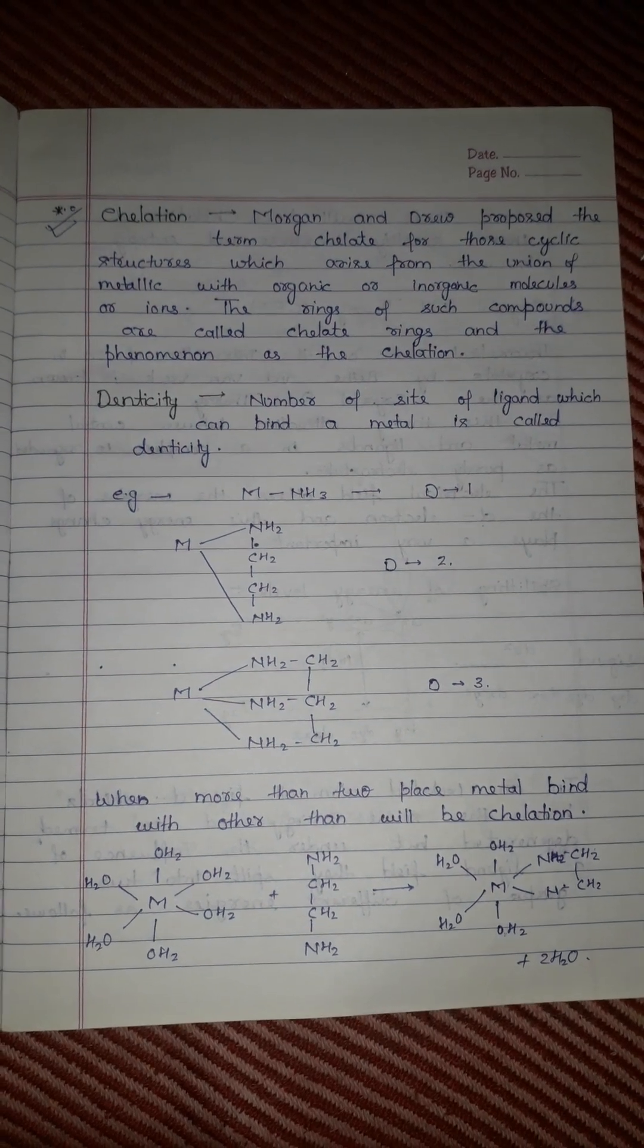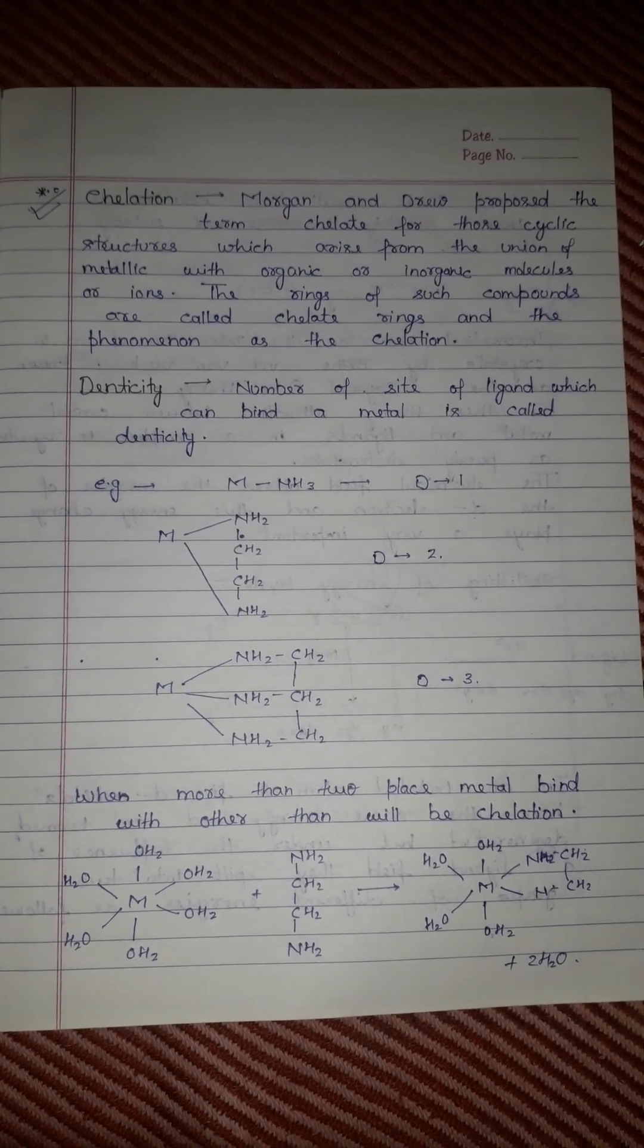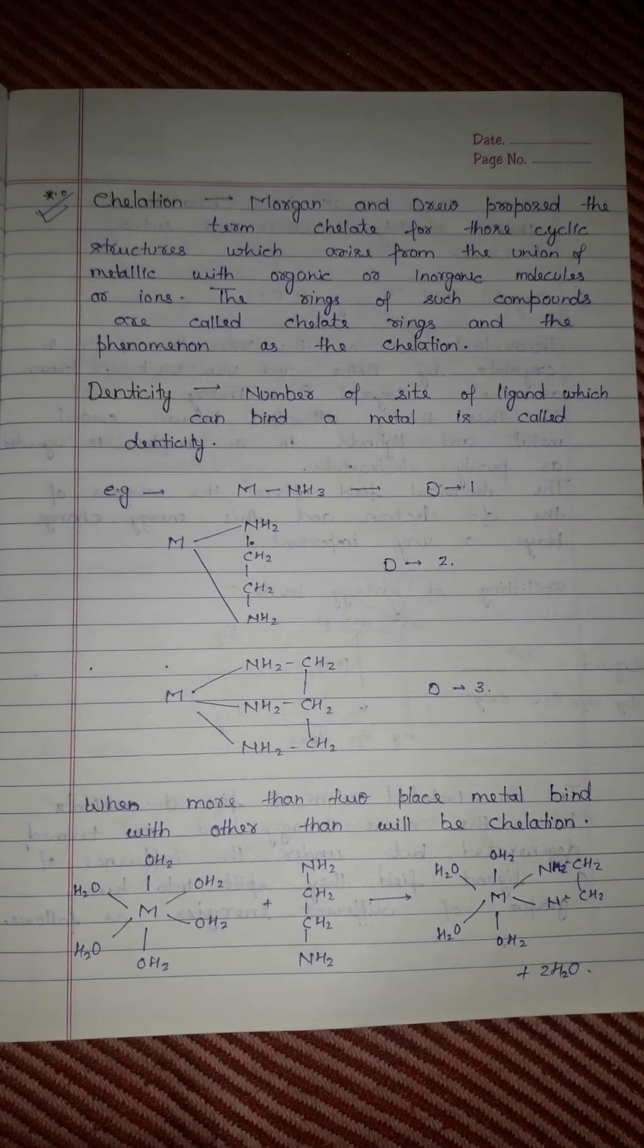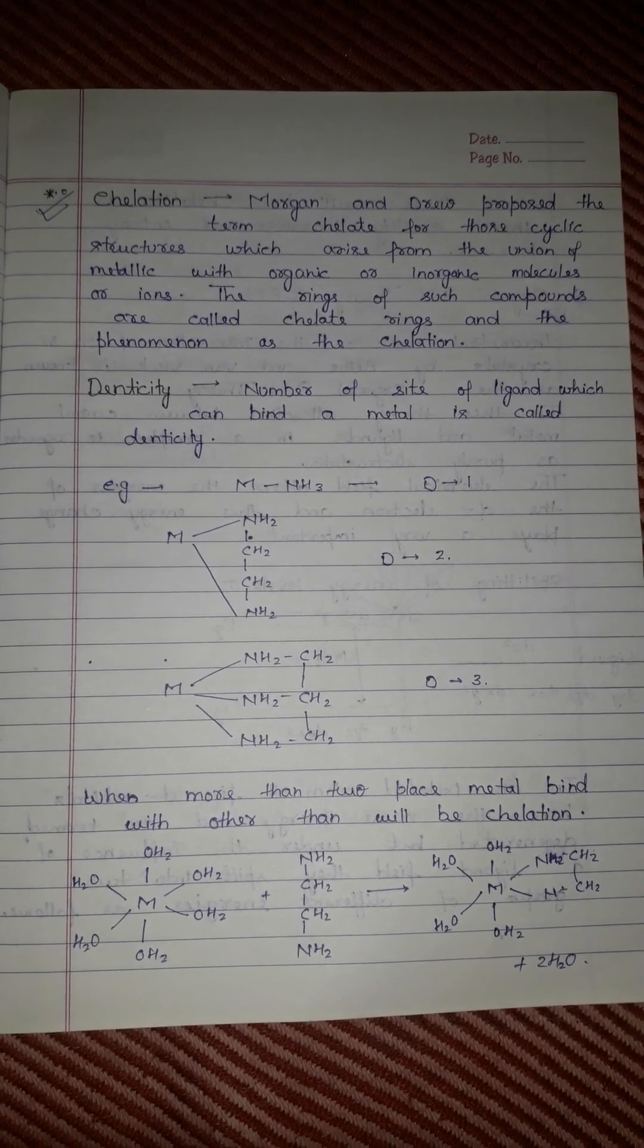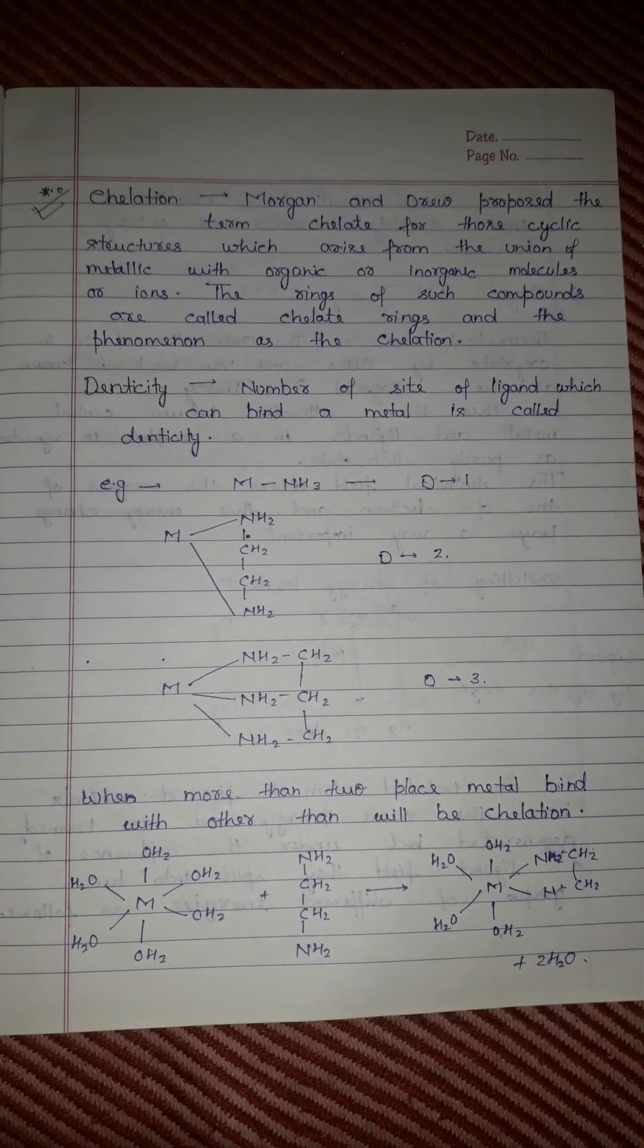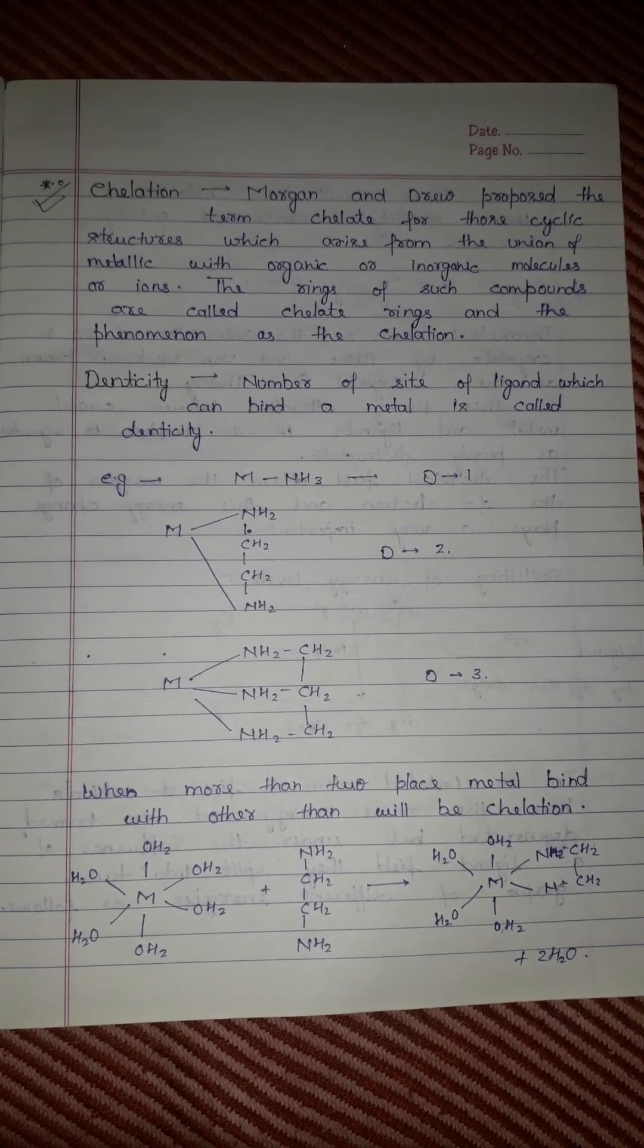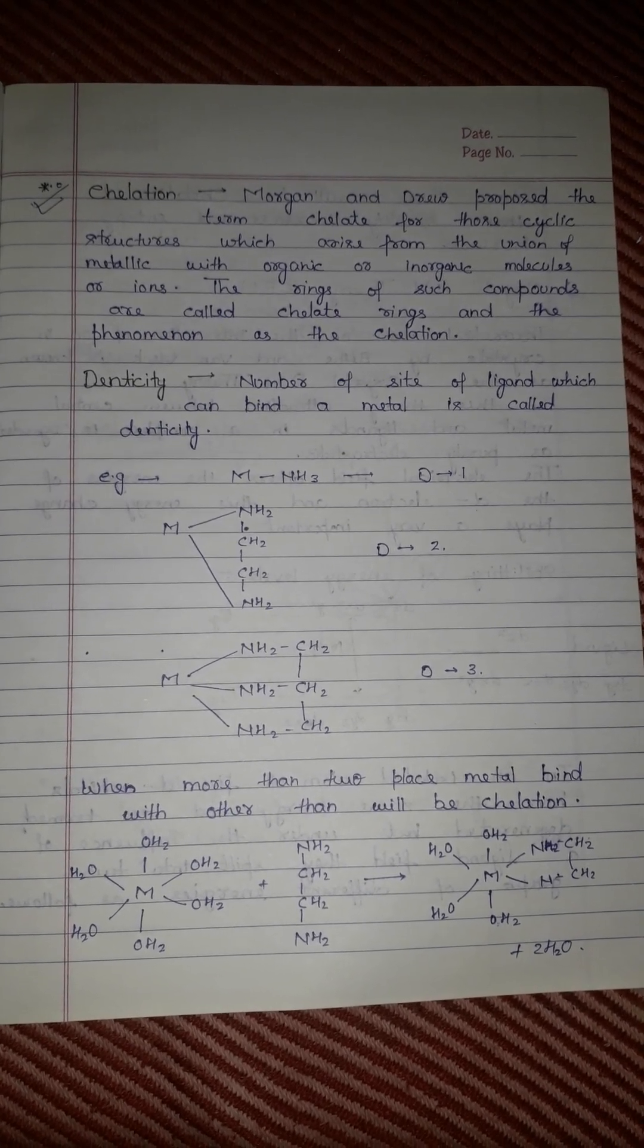Hello guys, welcome to my channel. Today we discuss chelation. Morgan and Drew proposed the term chelate for those cyclic structures which arise from the union of metallic with organic or inorganic molecules or ions.